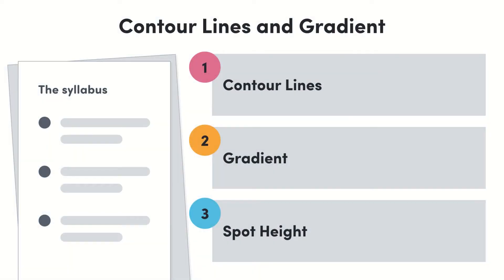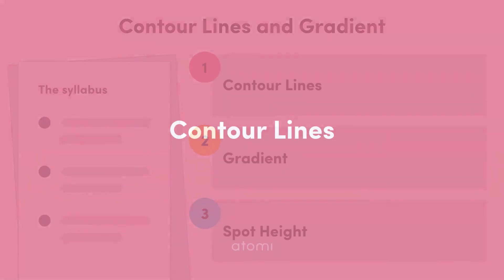Hey everyone! One of the most useful features of topographic maps is their ability to show hills and valleys using contours. In this lesson we will firstly describe what contour lines are, then we will look at how we can use contour lines to describe gradient. Lastly we will run through spot heights, so let's get going!